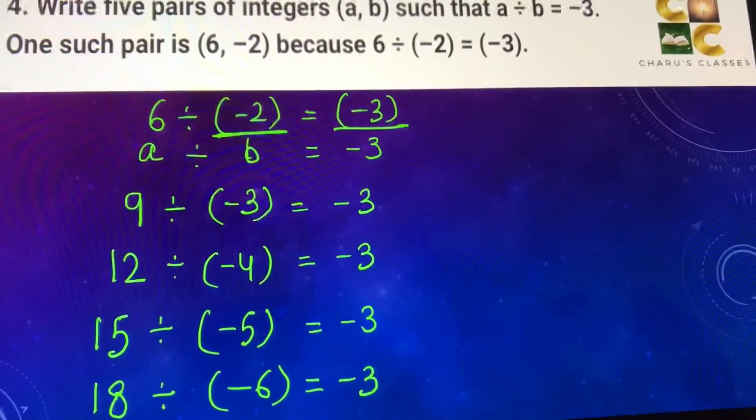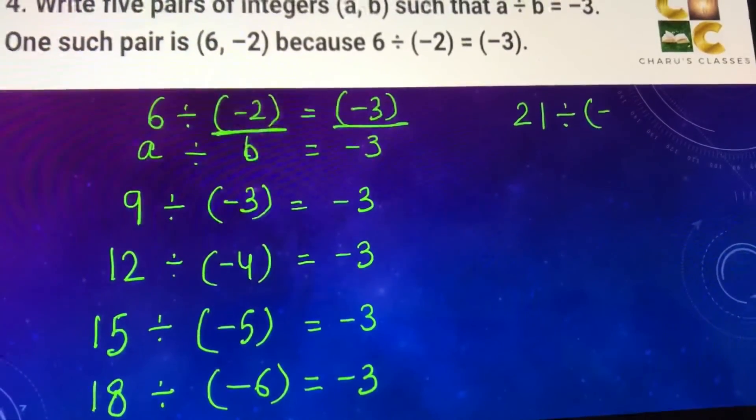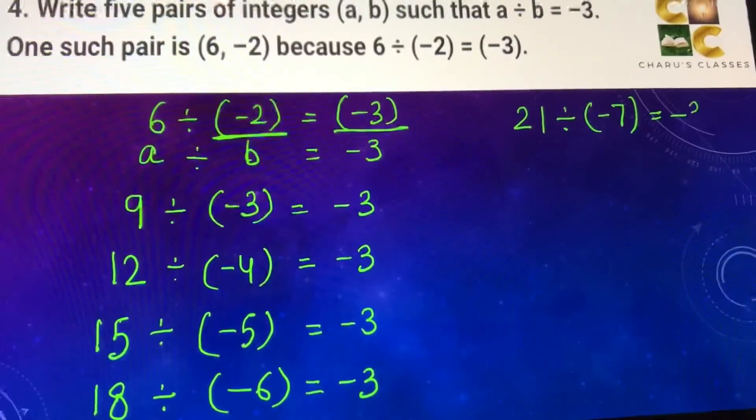And 3 sevens are 21. So I can have 21 divided by minus 7 is equal to minus 3.